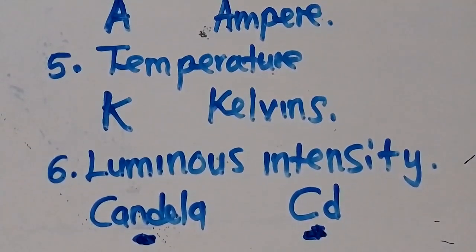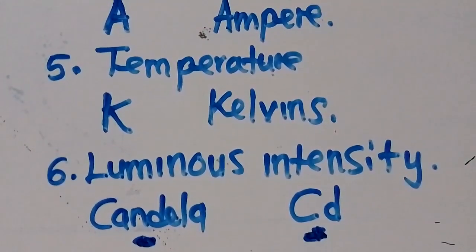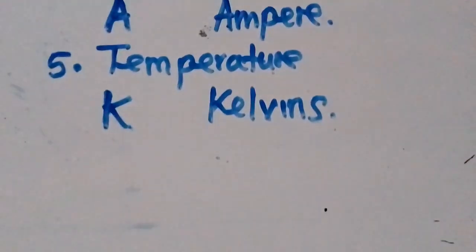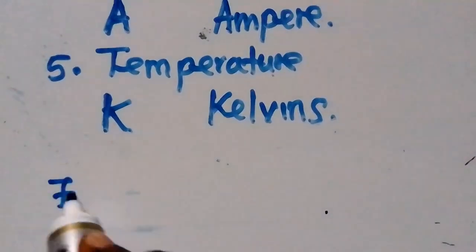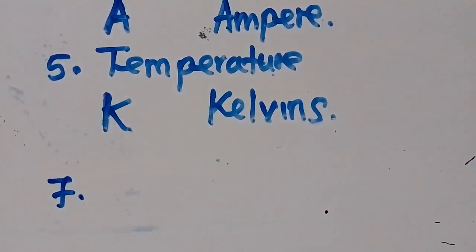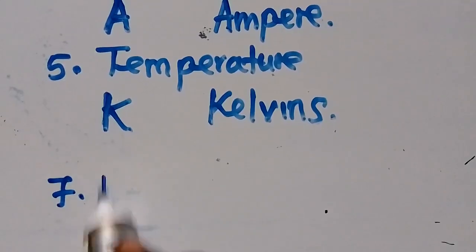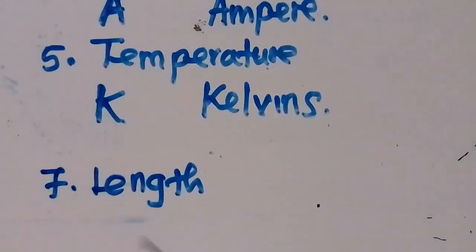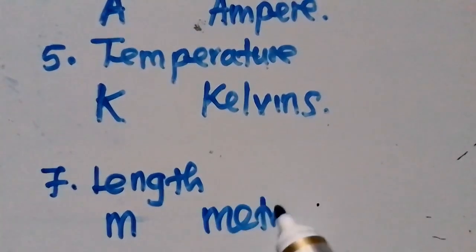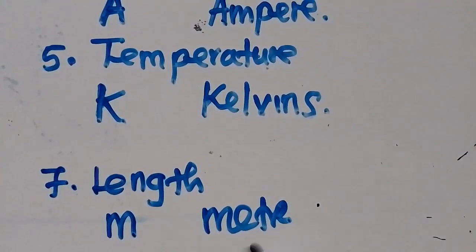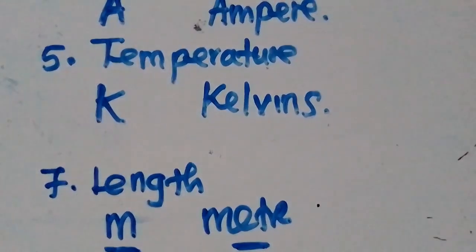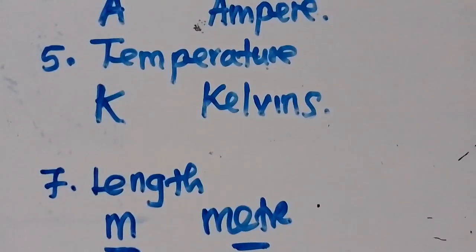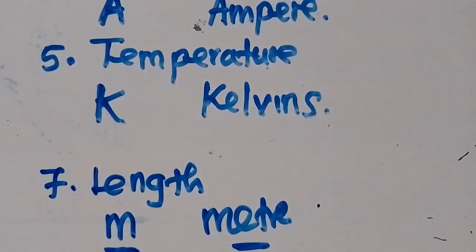The last one — number seven — is length. Length is measured in meters, small letter 'm'. In words, this is how we write meter. So length is measured in meters. These are all the basic units that we have. Let's make sure we get all these and understand every point.